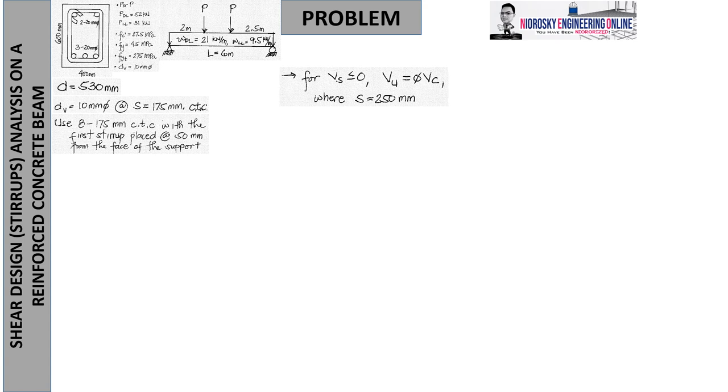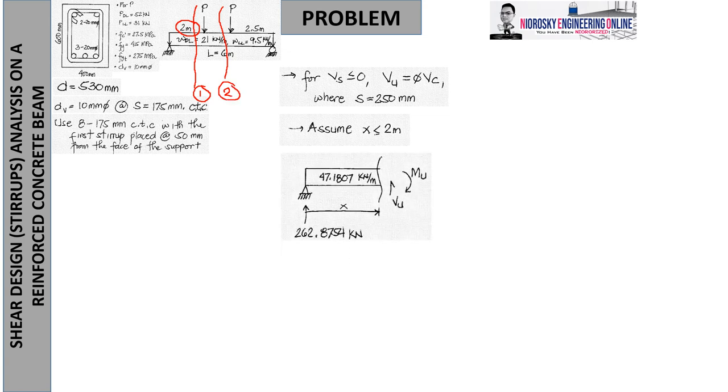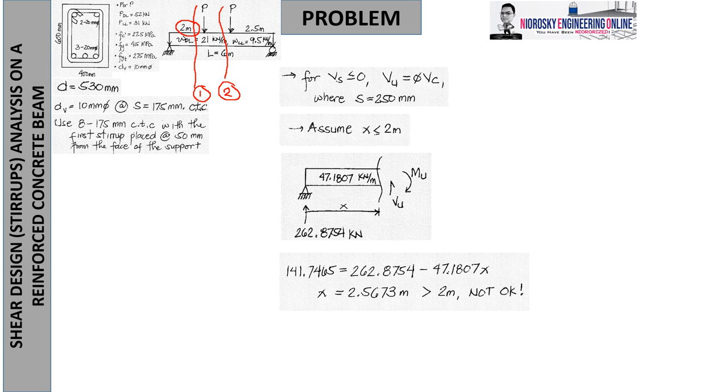We need to find out where would be the area that will require the Z space of stirrups after 250mm as we have already calculated this in part 1 of 2 of this session. So we might want to use V equals VVC, the potential location of the Z area. We need to assume x less than 2 since we have 2 meters. Using the shear equation, you will arrive to this particular equation and find out that it is more than 2, since we got 2.5673 meters. So this is not okay, the assumption is not good.